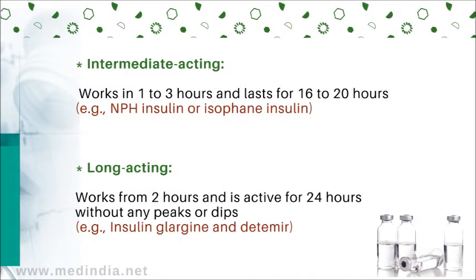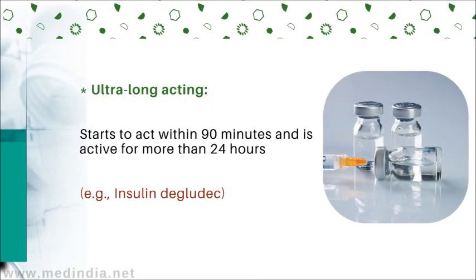Intermediate acting insulin works in 1 to 3 hours and lasts for 16 to 20 hours. Long acting insulin works from 2 hours and is active for 24 hours without any peaks or dips. Ultra long acting insulin starts to act within 90 minutes and is active for more than 24 hours.